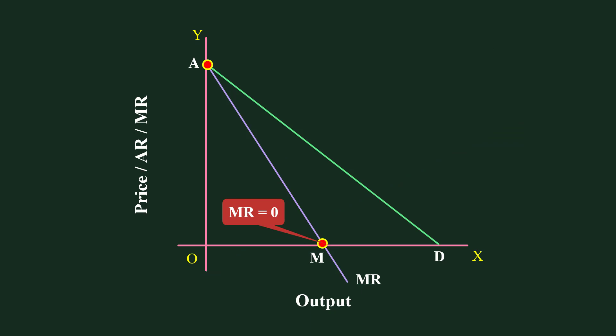First: At point M, Marginal Revenue is 0. Point C on the Average Revenue Curve is directly above point M. Point C is at the center of the Average Revenue Curve, and exactly at that point, Elasticity is Unitary.